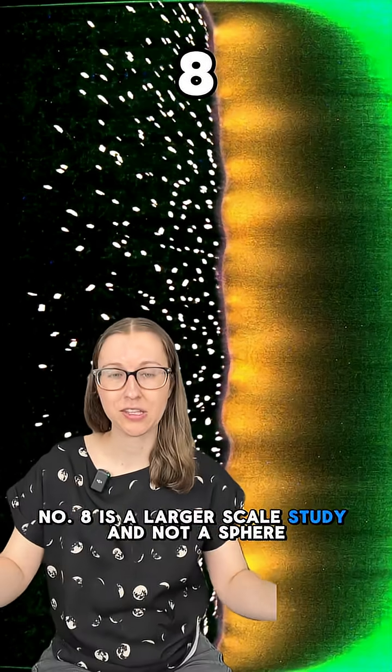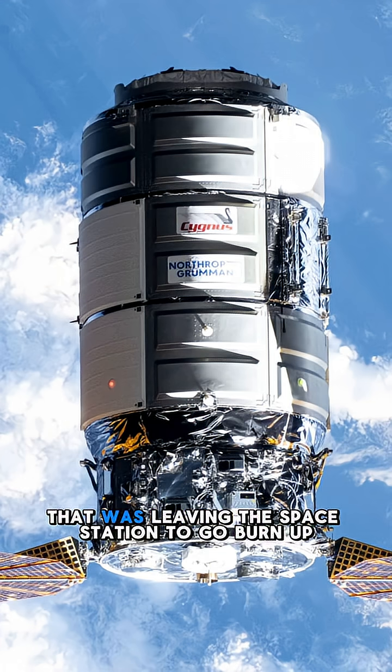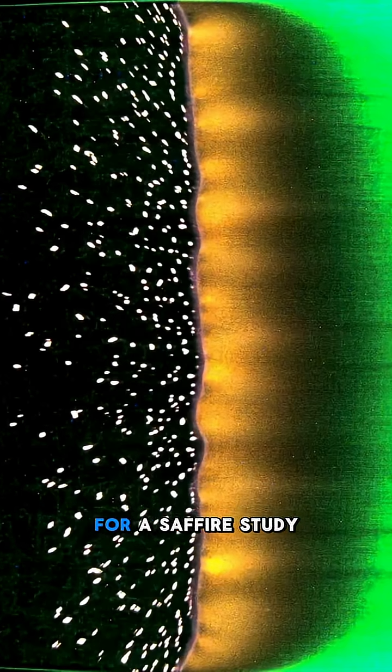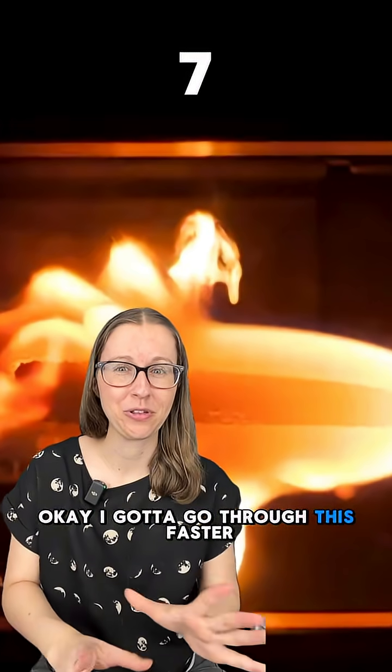Number eight is a larger scale study and not a sphere. There was a piece of fabric that was burned aboard a Cygnus spacecraft that was leaving the space station to go burn up upon re-entry into the atmosphere for a Sapphire study. These were really helpful larger scales of fire in space. Okay, I gotta go through these faster.